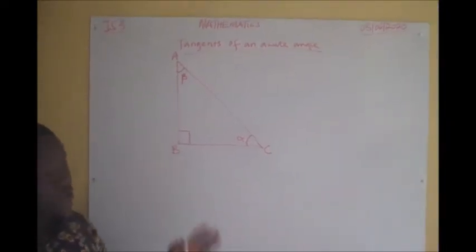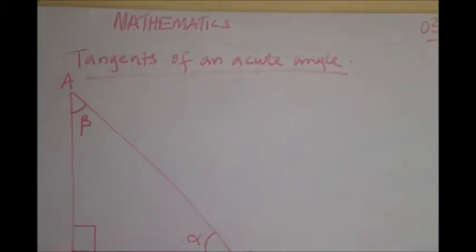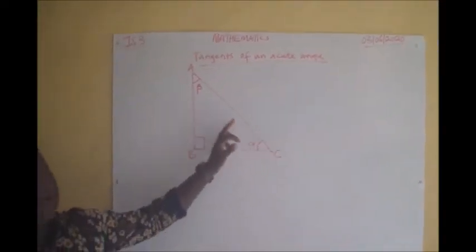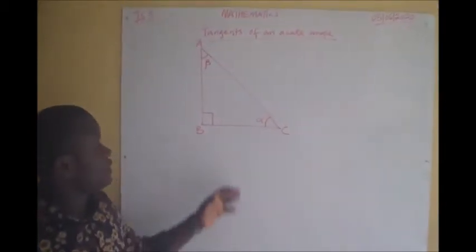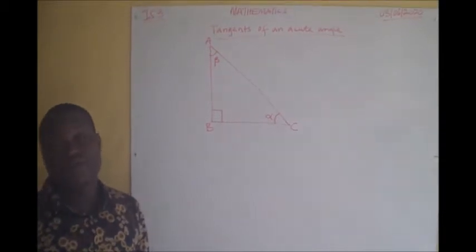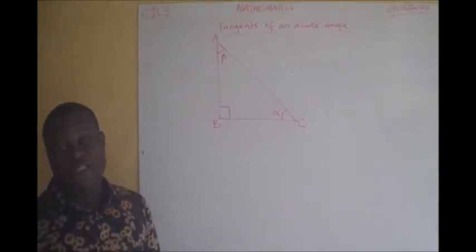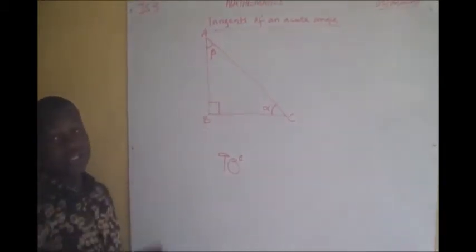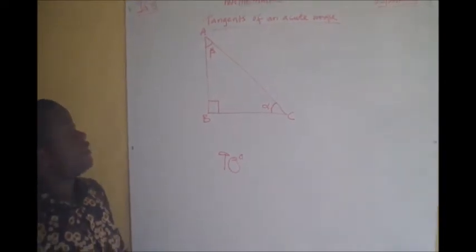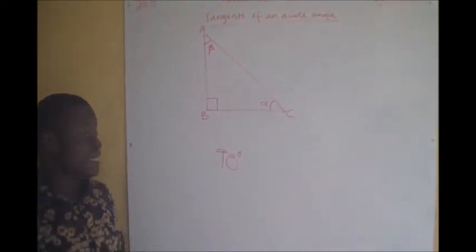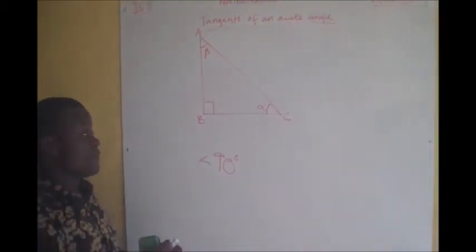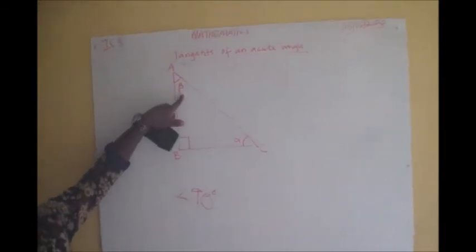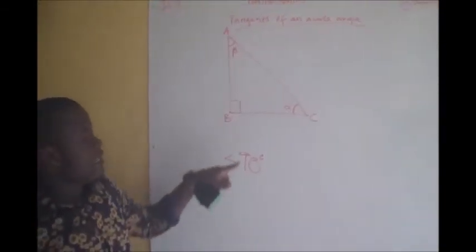Before I go to the board, let me remind you of the definition of a right-angled triangle, as well as the acute angles that appear — angle alpha and angle beta. We define a right-angled triangle as a triangle in which one of its angles is 90 degrees. We define an acute angle as an angle that is less than 90 degrees. So alpha is an acute angle here, less than 90 degrees, and beta is another acute angle, also less than 90 degrees.